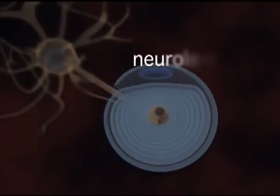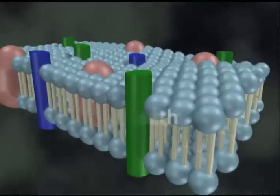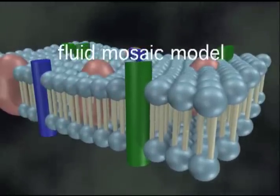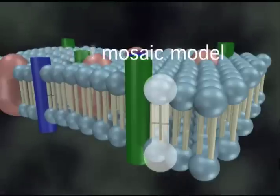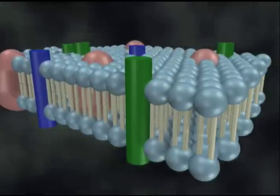This outer wrapping of the Schwann cell is called the neurolemma. The inner lining is made up of layers upon layers of cell membrane. This inner wrapping is called the myelin sheath. You will recall that the cell membrane, called the fluid mosaic model, is made up of a bilayer of lipids integrated with proteins.